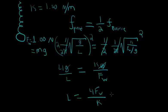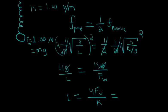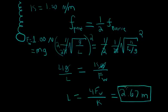If we put the numbers in - 4 times 1.00 newtons divided by 1.50 newtons per meter - we get 2.67 meters, which is the length of the spring.